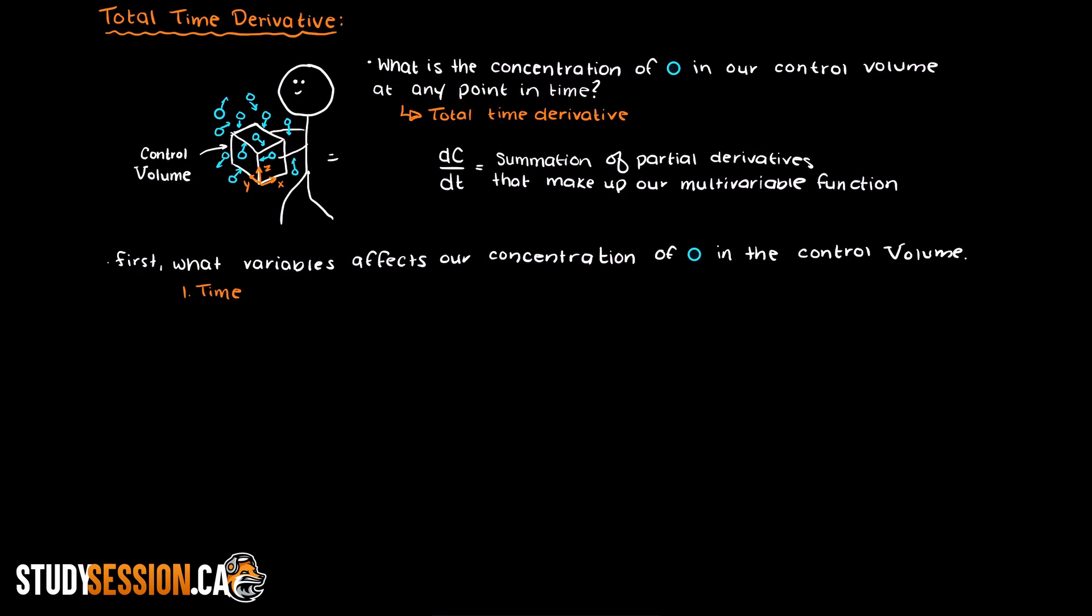Well, if we are moving around the room with our control volume, our cube of interest, then our position will also affect the concentration, right? Therefore, we have four variables that constitute our multivariable function, that is the time and the three spatial variables x, y, and z.